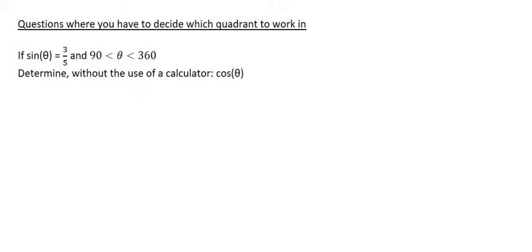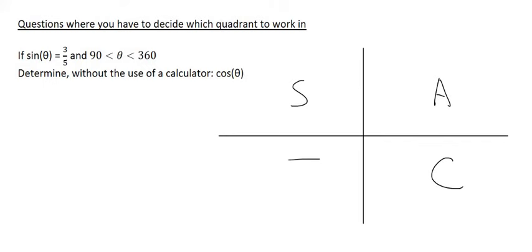So we know that we have this thing called the CAST diagram, where it starts here at C, then A, then S, and then T. So let's solve this mystery. They're telling us that the first piece of information, well they tell us that sin of this angle is positive. Can we see that 3 over 5 is positive? So where is sin positive?